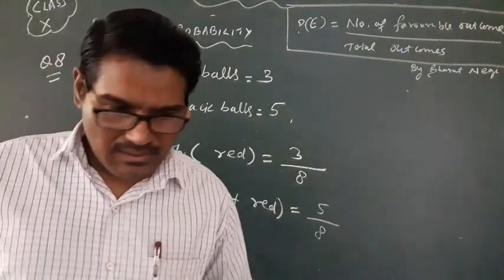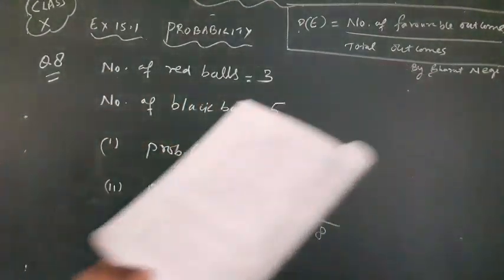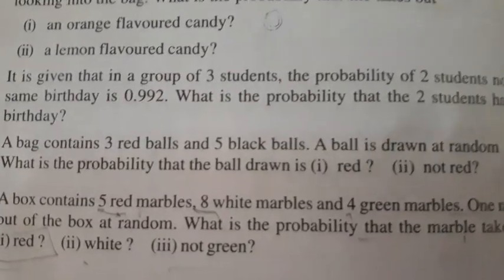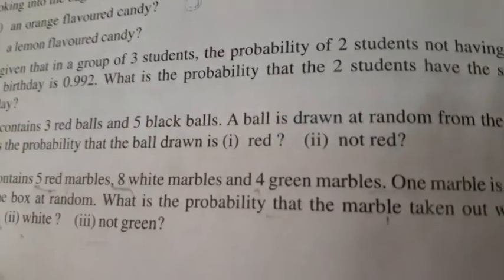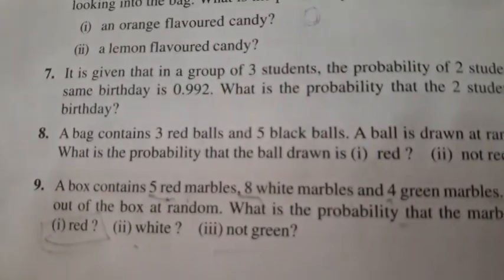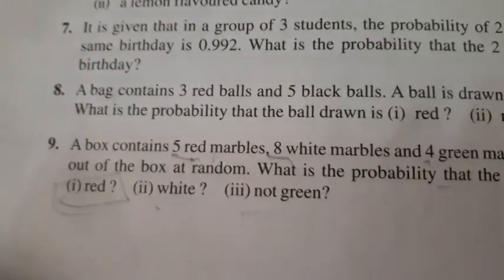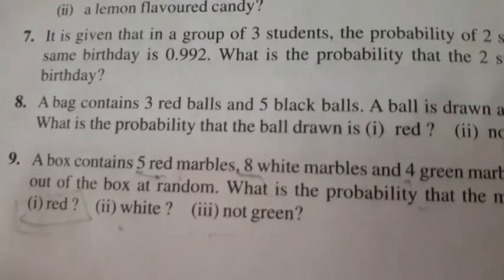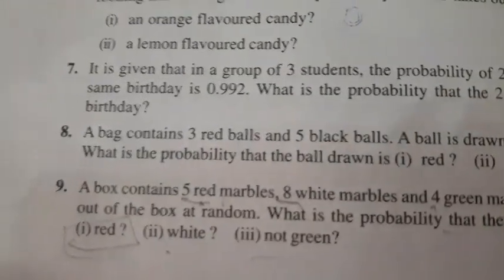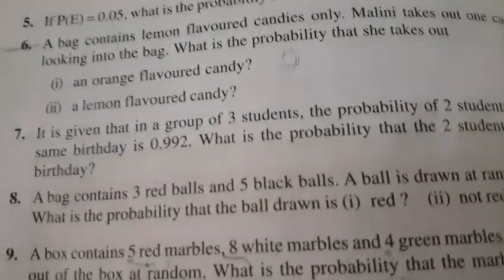Now, look at question number 9. A box contains 5 red marbles, 8 white marbles and 4 green marbles. One marble is taken out of the box at random. What is the probability that the marble taken out will be red, white or not green? How can we do? So, this is very easy. Similar as we did in question 8. Same way we will do.